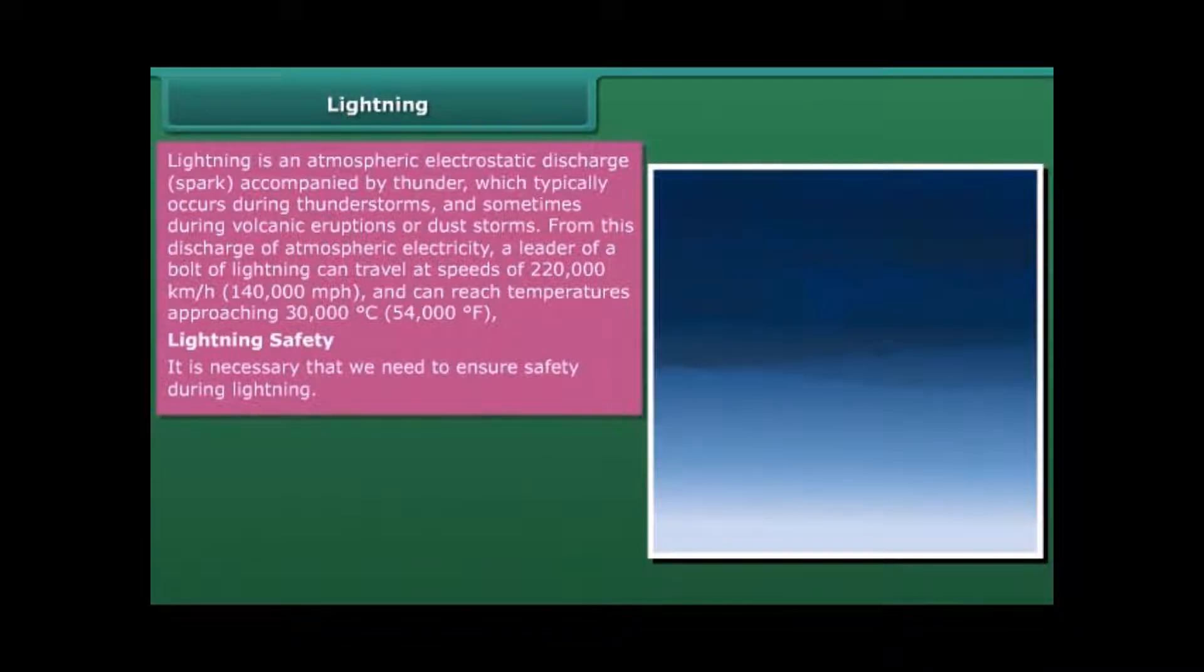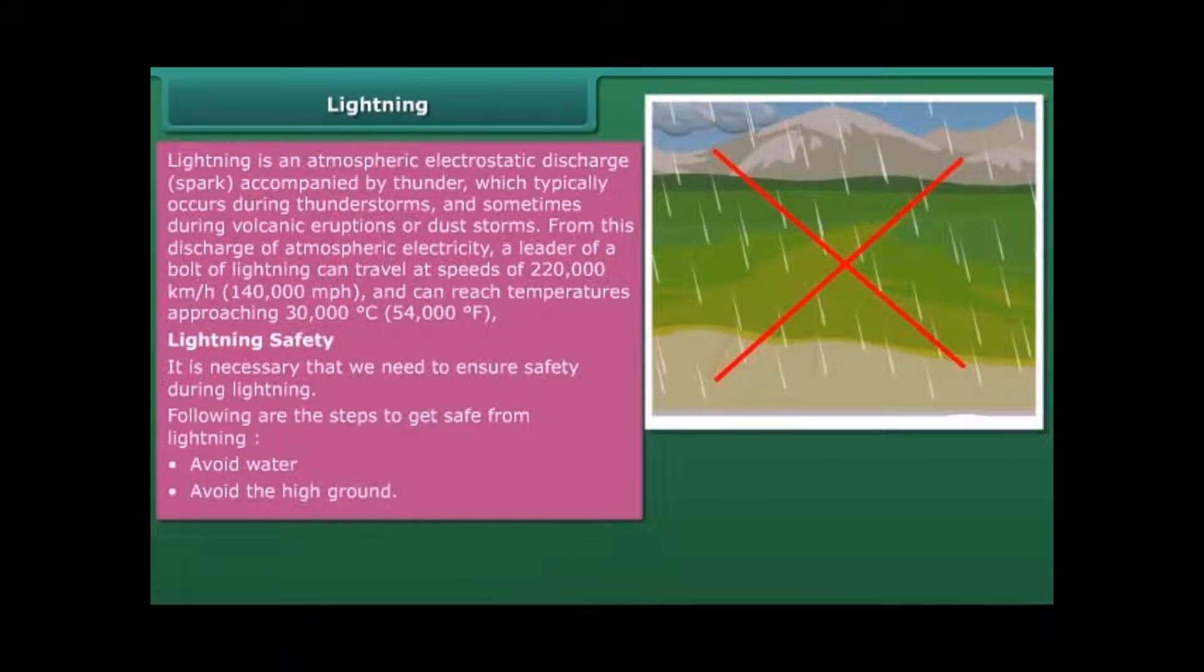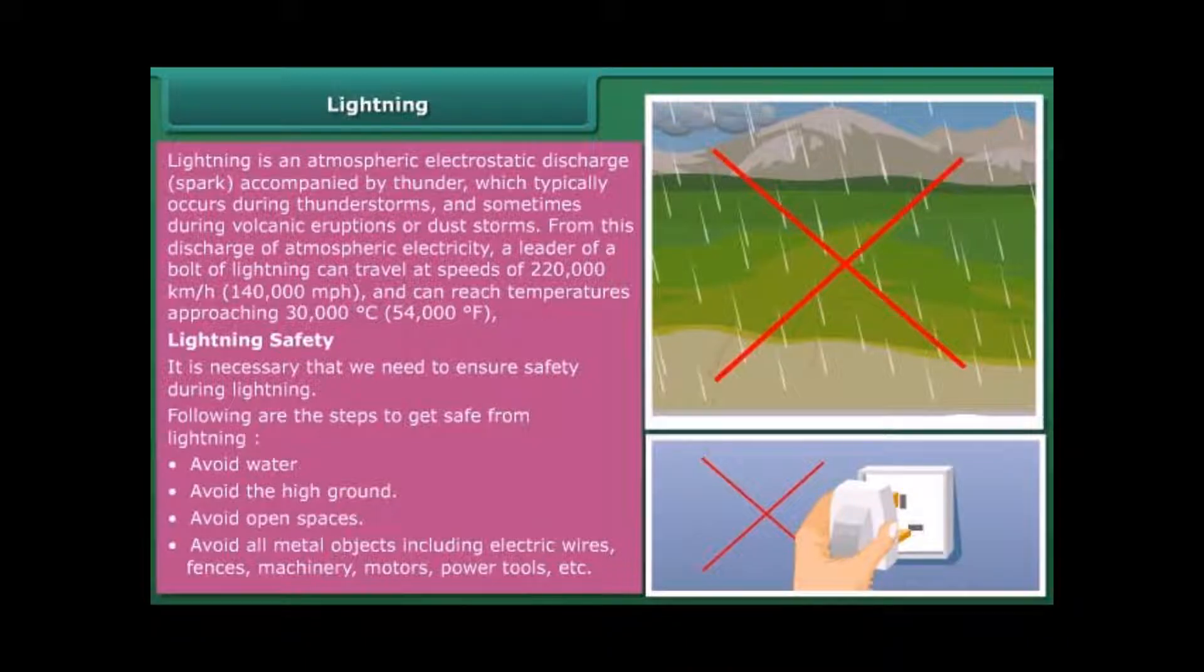It is necessary that we need to ensure safety during lightning. Following are the steps to get safe from lightning: avoid water, avoid the high ground, avoid open spaces, avoid all metal objects including electric wires, fences, machinery, motors, power tools, etc.